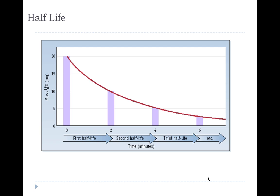This is how a half-life works. Say you've got the isotopic radioactive oxygen-15. Say you start off with 20 milligrams of oxygen-15. After the first half-life, you only have 10 milligrams.